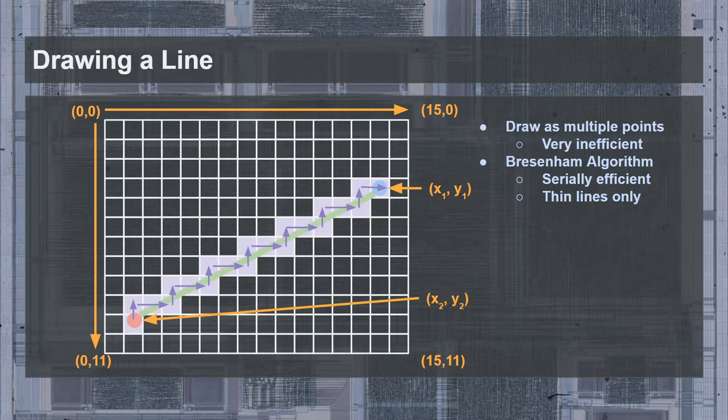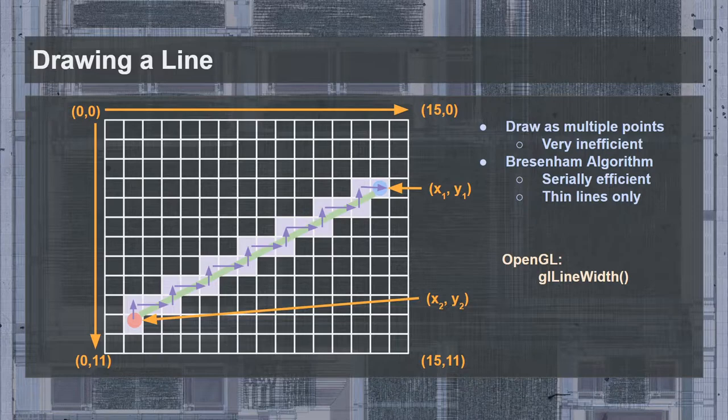This algorithm works by accumulating errors to figure out which direction to step next. For older hardware, this was very efficient, but it can't be parallelized for GPUs that can do more than one pixel per cycle. Also, this algorithm only works for single pixel wide lines, making the result dependent on the resolution of the frame buffer. Does this matter? Well, when we look back at OpenGL, it provides the function for lines to be arbitrarily wide, which Bresenham can't do. One solution is to just draw multiple lines to make one thicker. But that leads to the same inefficiencies as the multiple-point method.